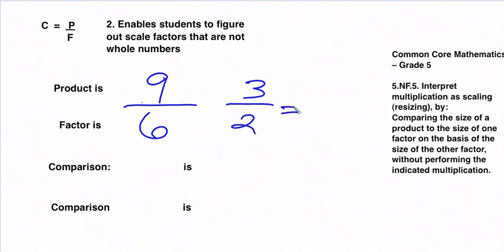That will simplify to 3 over 2, which, as a mixed number, would be 1 and a half. So then the comparison would be that 9 is 1 and a half times bigger than 6.